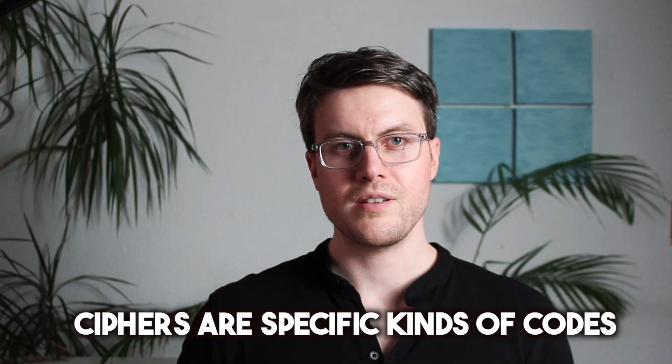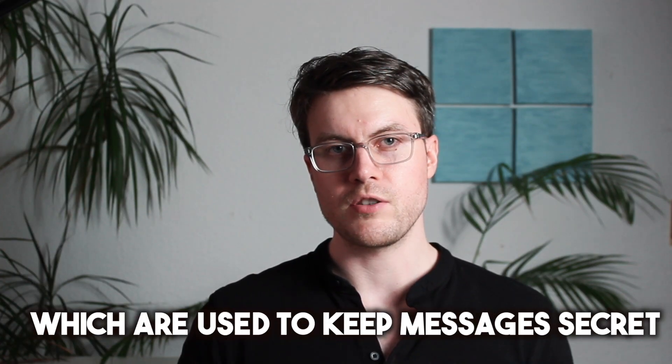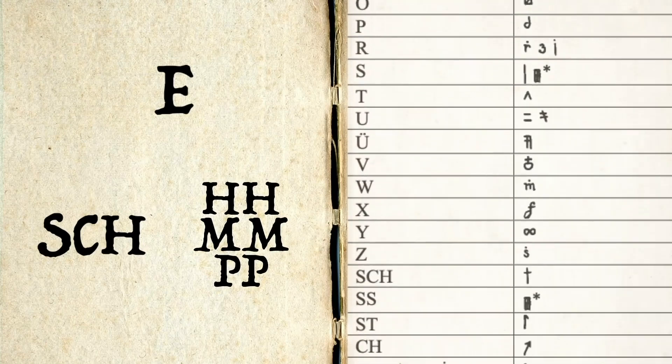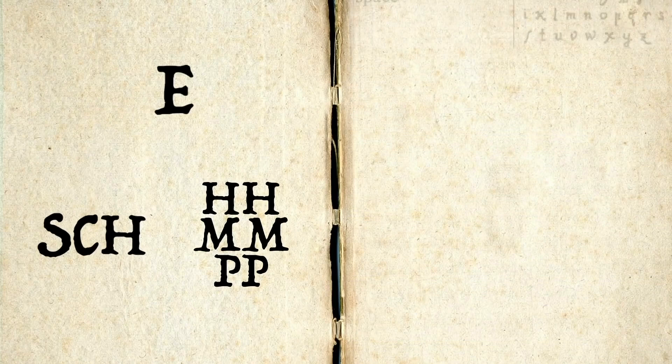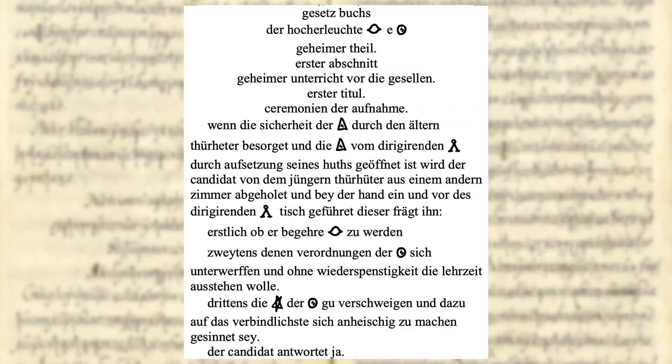In contrast with codes, ciphers are specific kind of codes which are used to keep messages secret. We can use a cipher to turn understandable English text, plain text, into gibberish that hides a secret message, which is called the ciphertext. So cipher is a set of rules for converting between plain text and ciphertext.